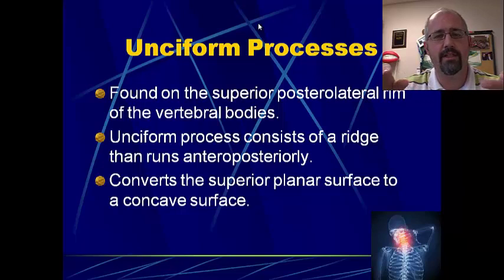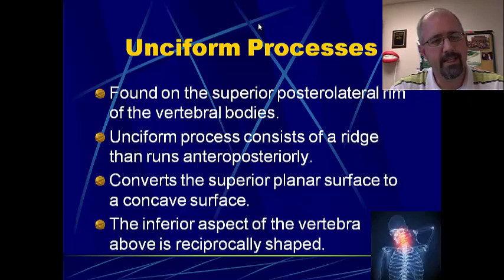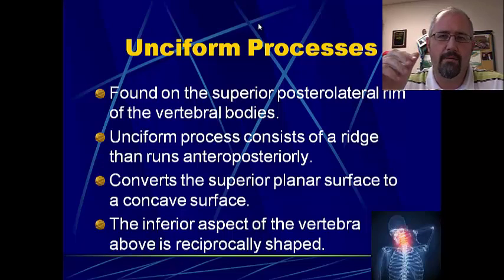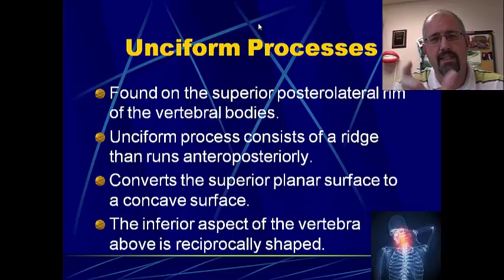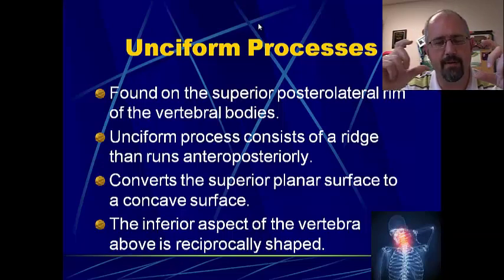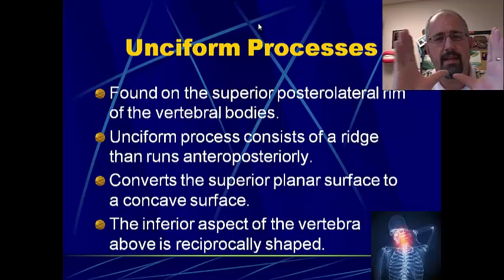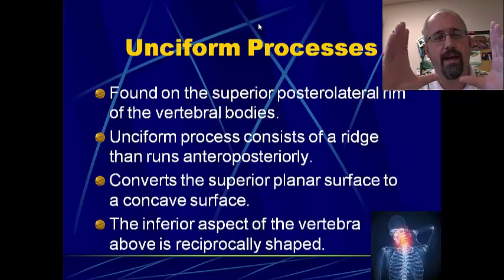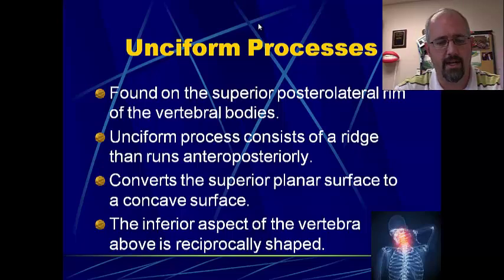That ridge of bone is called the unciform process. It takes that flat planar surface and turns it into that concavity that you see. This is different — you do not have this in the lumbar or thoracic vertebrae. So with the cervical spine, you've got to remember that on the lateral side you've got these unciform processes. Consequently, if you look at the inferior aspect of the vertebral body above, it's kind of reciprocally shaped, so they sit in this nice U shape and fall naturally into each other. With a ridge of bone on either side, the disc in the middle is not going to be able to move laterally. So in the cervical vertebrae, because of the unciform processes, lateral disc protrusions are very uncommon.